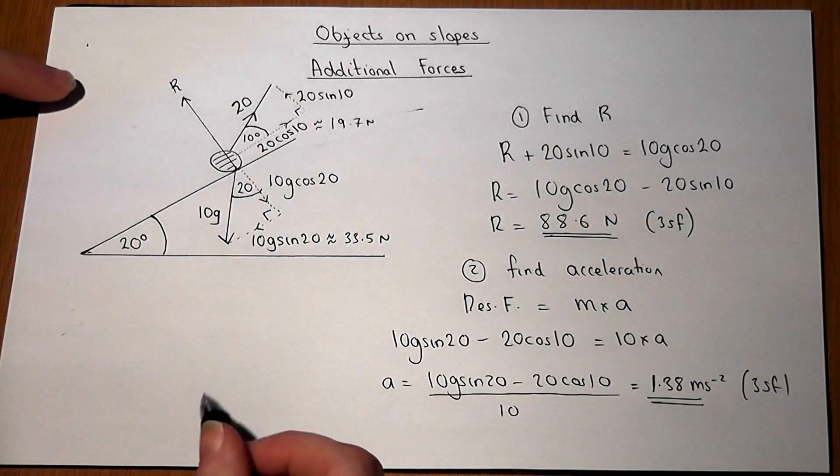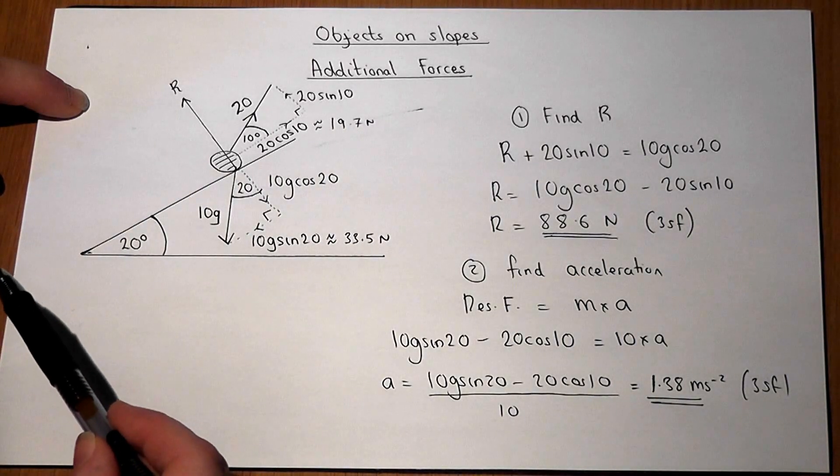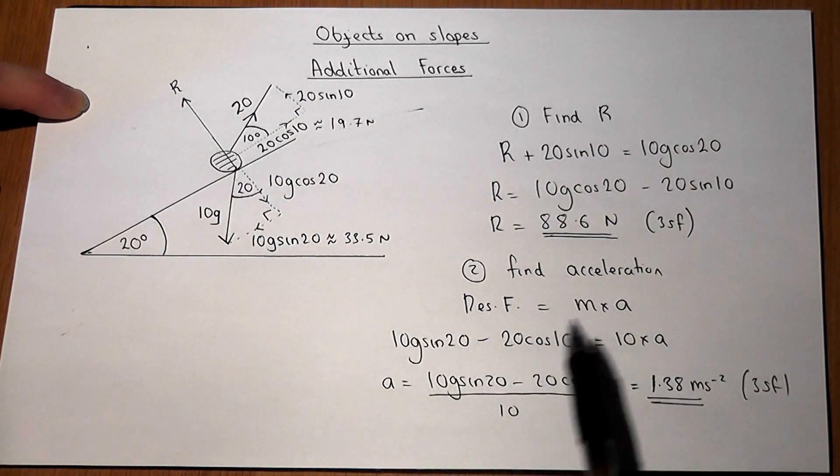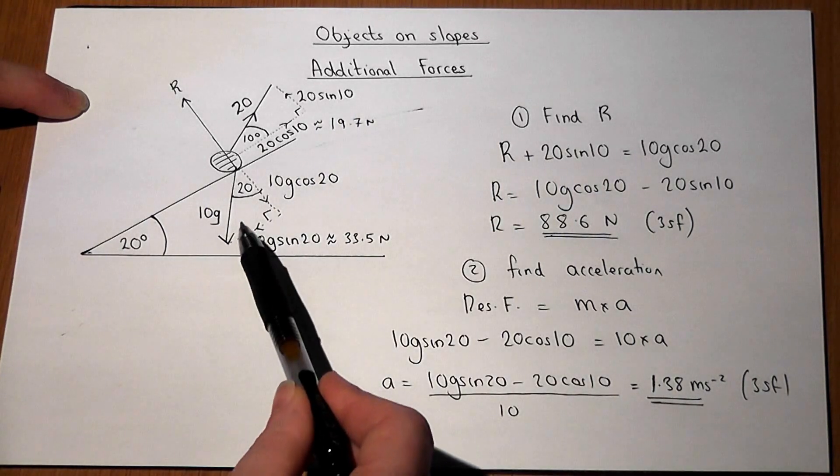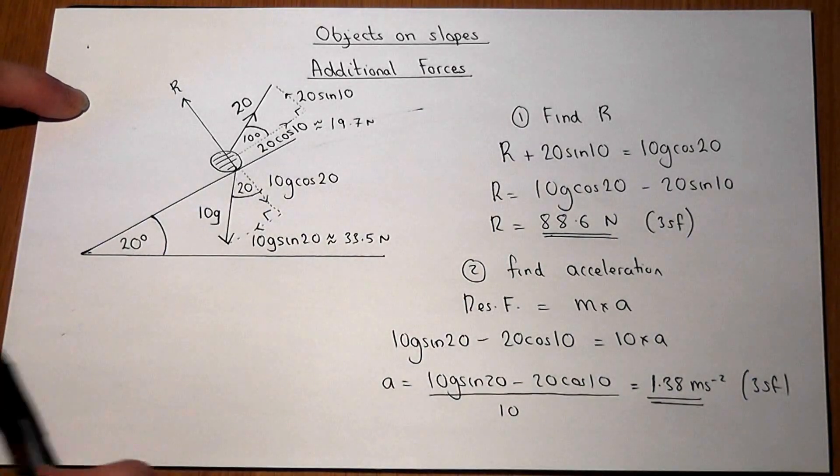So again, with multiple forces acting, the trick is to resolve all the forces into components. Then to find R, consider the vertical components. And to find A, consider the horizontal components. But bear in mind that we have to consider the direction of motion, which in this case was down the slope.